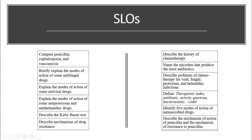The things we want to know in this chapter are listed in this slide. We are going to compare penicillin, cephalosporin, and vancomycin together and how they differ from one another. We will briefly explain the modes of action of some antifungal drugs, some antiviral drugs, some protozoal and anti-helminthic drugs, and describe the Kirby-Bauer test and how to use the Kirby-Bauer table to analyze the test. We will also describe the mechanism of drug resistance among microbes.